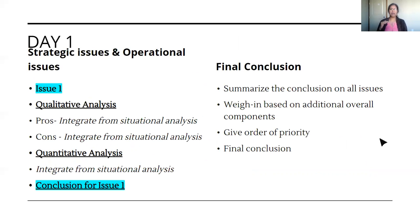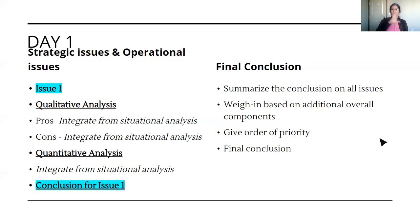For the strategic and operational issues, follow the format: qualitative analysis with pros and cons, quantitative analysis, and then the conclusion. Integration is being tested here — for each pro or con, explain how it benefits or hinders achieving the company's goals, targets, values, key success factors, or SWOT elements. Everything links back to your situational analysis. I would aim for at least two to three integration points in every strategic option.